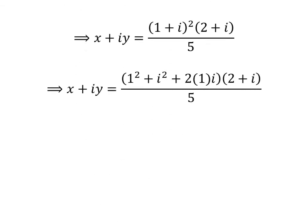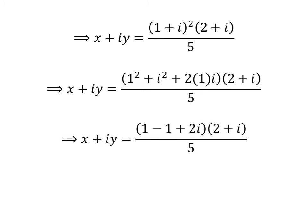Let us expand the square of (1 plus i), which equals the square of 1 plus the square of i plus 2 times i. We know the square of the imaginary unit is equal to minus 1. Thus, x plus i times y is equal to (1 minus 1 plus 2i) times (2 plus i) upon 5.